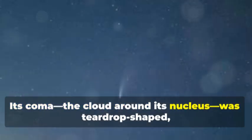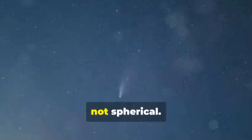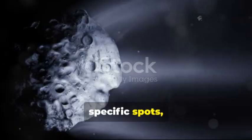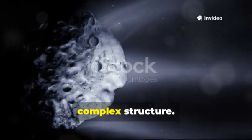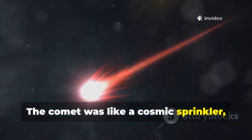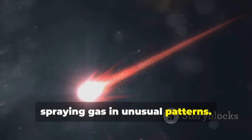Its coma, the cloud around its nucleus, was teardrop-shaped, not spherical. This suggested jets of gas erupting from specific spots, creating a dynamic, complex structure. The comet was like a cosmic sprinkler, spraying gas in unusual patterns.